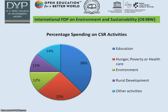Here we have the percentage spending of CSR activities. The act says that 2% of the net profit is to be spent on CSR. This figure shows that only 12% of total spending is done on environment, and 38% and 25% on education and healthcare/hunger/poverty respectively. If industries increase spending on the environment, healthcare, hunger, poverty, and education can also be addressed, and rural development can be done in a faster way.